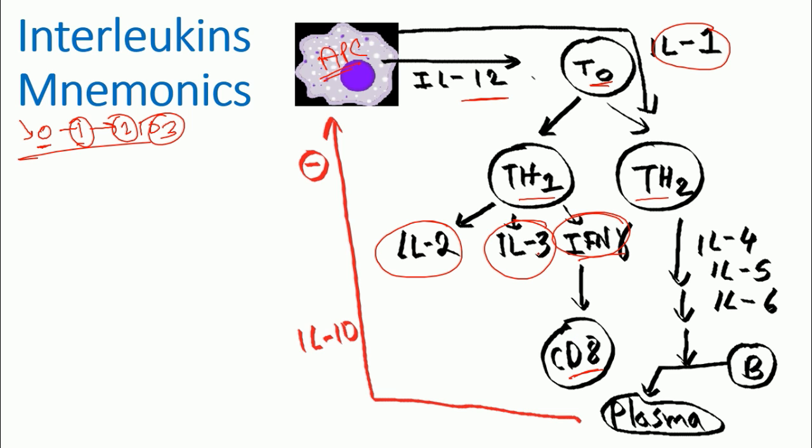Let's end that process. Now if we go with the T helper 2 cells, T helper 2 on the other hand will secrete interleukin 4, 5 and 6 which will ultimately signal B cells to mature into plasma cells which will turn into antibody secreting factories. So you know T helper 1, once formed from naive T cell, they will produce 1 and interleukin 2 and interleukin 3 and interferon gamma. And T helper 2 is going to release interleukin 4, 5 and 6. So we are going from 0, 1, 2, 3, 4, 5, 6 and this 4, 5, 6 are responsible to convert B cell into plasma cells.